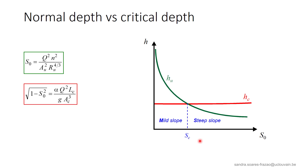Slopes milder than Sc will be called mild slopes, and in this case the normal depth will be larger than the critical depth. Slopes larger than Sc will be called steep slopes, and are characterized by the fact that the normal depth is below the critical depth.